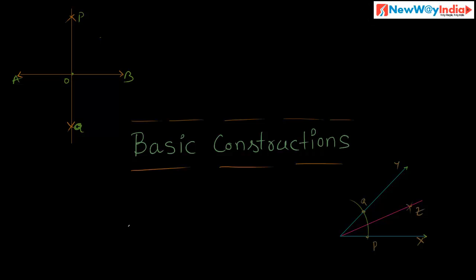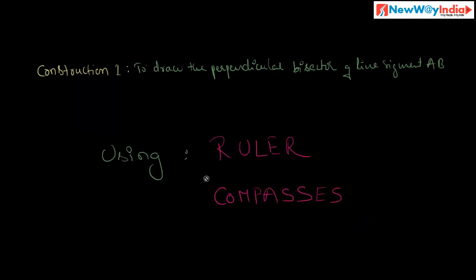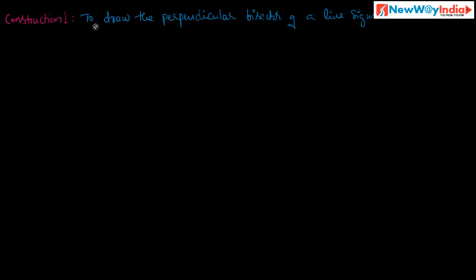Let us discuss basic constructions. Construction one: to draw the perpendicular bisector of a line segment AB. That means we have to draw the perpendicular bisector of a line segment by using ruler and compasses.